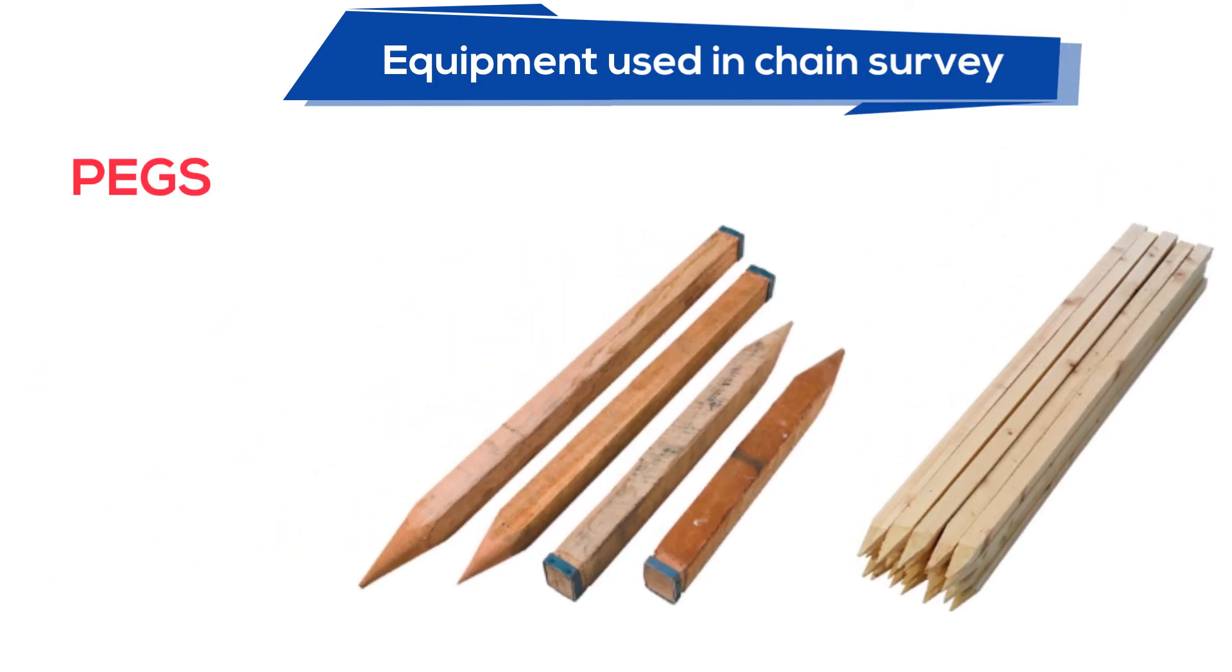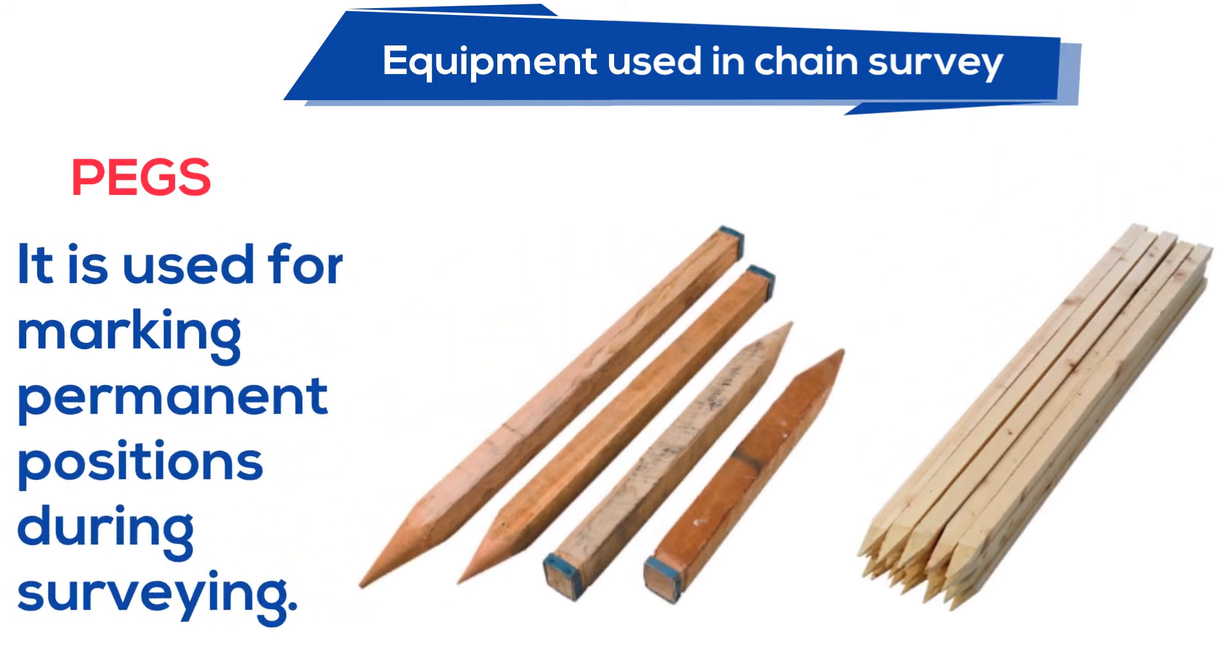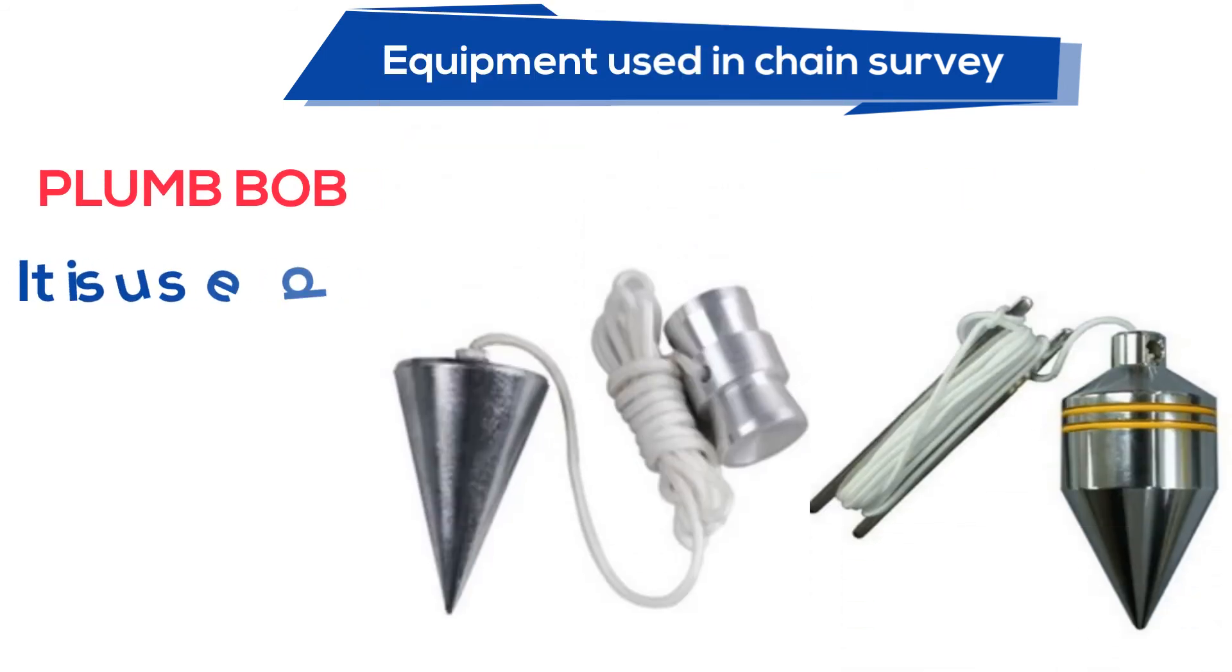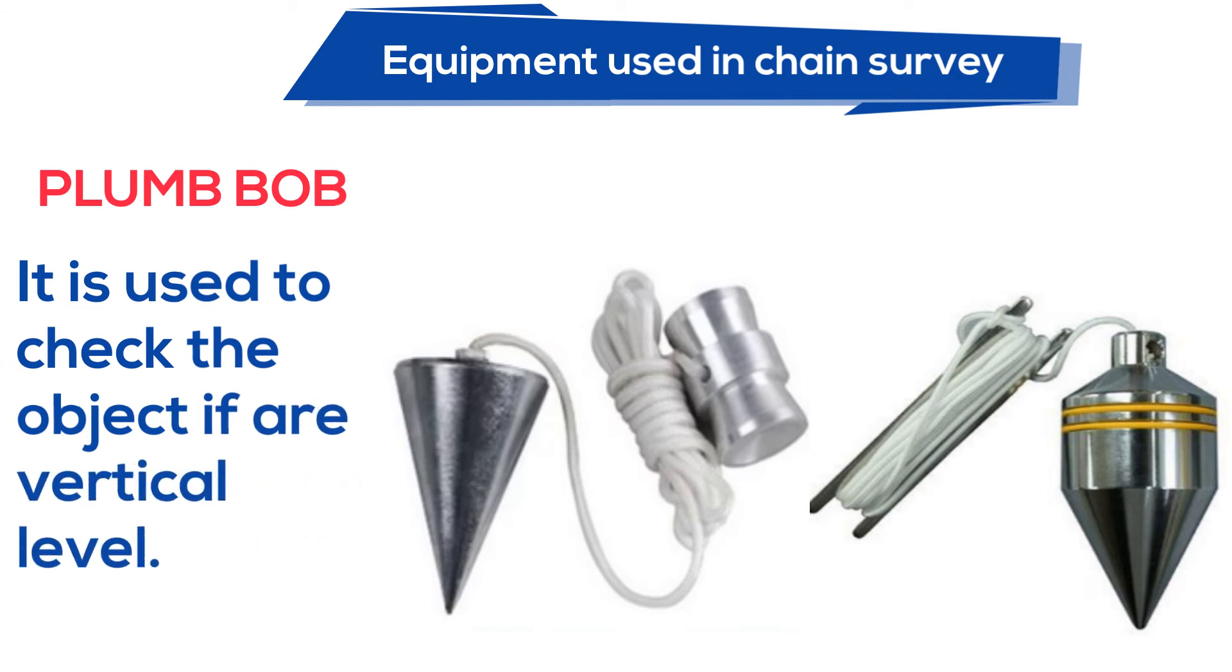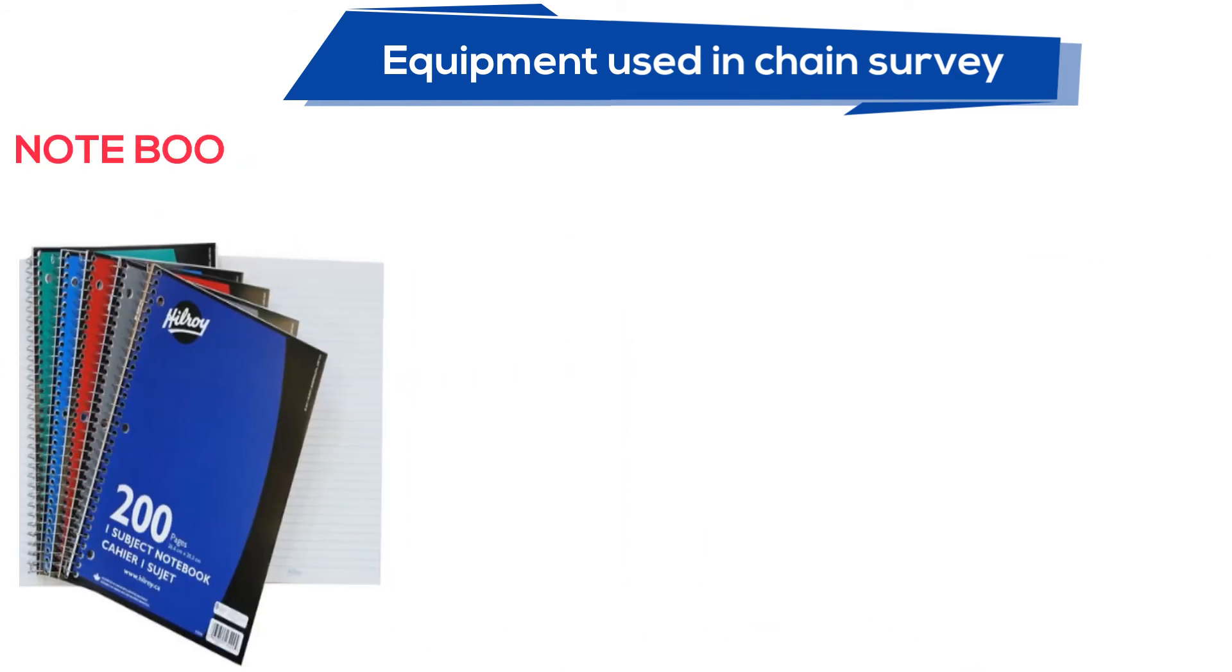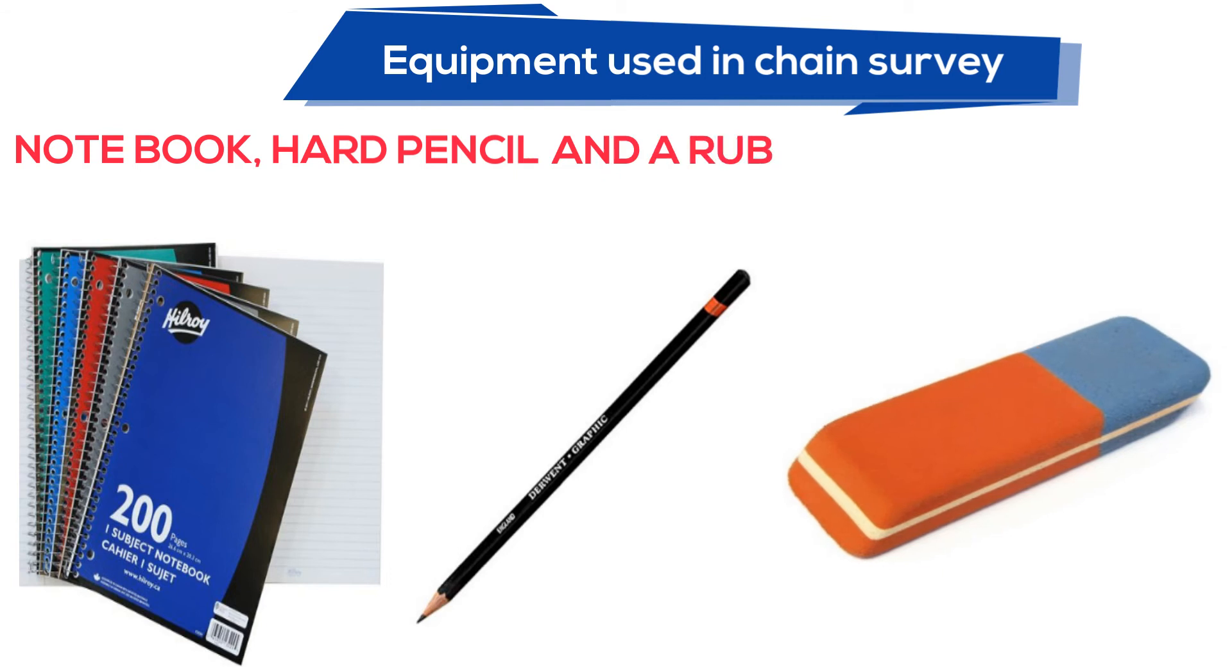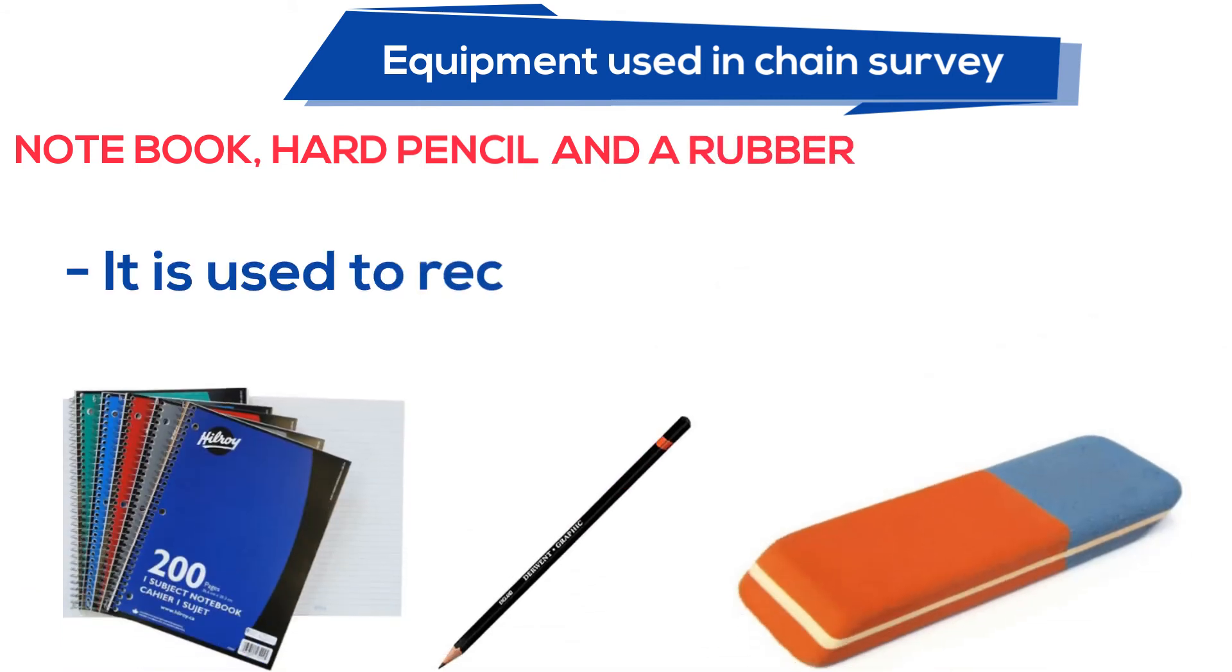Pegs, it is used for marking permanent positions during surveying. Plumb bob, it is used to check the object if a vertical level. Notebook, hard pencil and a rubber, it is used to record the data obtained from the field.